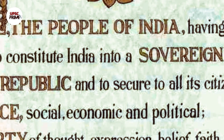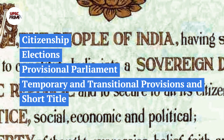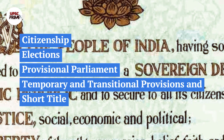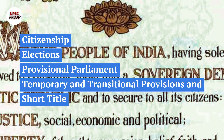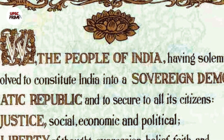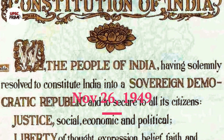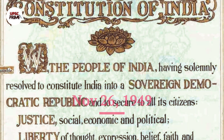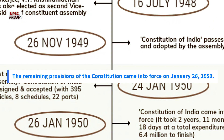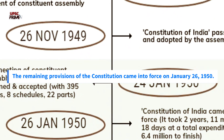Some provisions of the Constitution pertaining to citizenship, elections, provisional parliament, temporary and transitional provisions, and short title contained in some articles came into force on November 26, 1949 itself. The remaining provisions of the Constitution came into force on January 26, 1950.